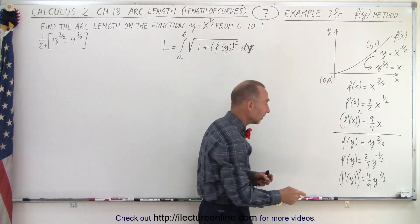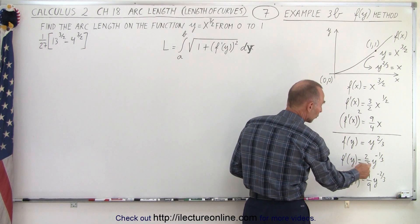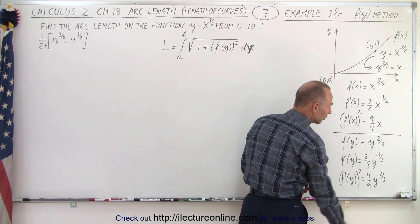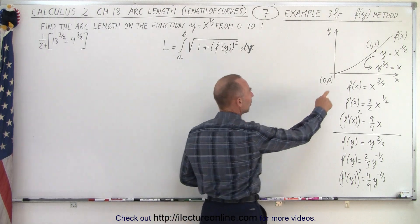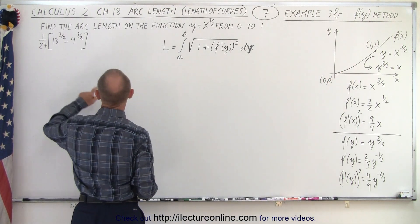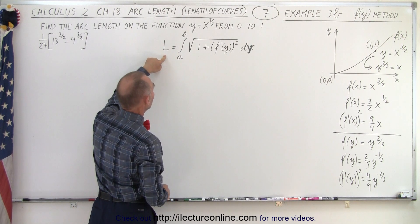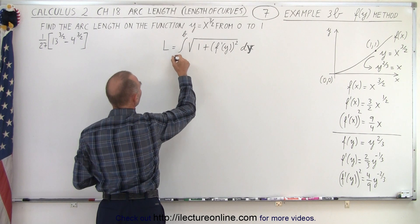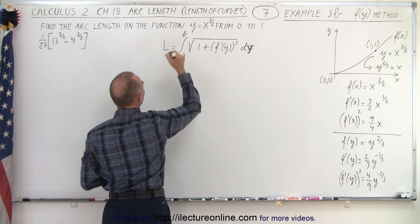Now we take the derivative of that — we get the derivative of the function is 2 thirds y to the minus 1 third, and when we square that we get 4 ninths y to the minus 2 thirds. So to get the arc length from (0,0) to (1,1), we're going to solve for this integral. However, in this case the limits are going to be from the function of a to the function of b.